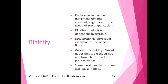Rigidity is resistance to passive movement that remains constant regardless of the speed or force of application — velocity-independent hypertonia, as opposed to spasticity which is velocity-dependent. With brain injuries, there are two specific patterns: decerebrate rigidity, which is rigid extension of the upper limbs, and decorticate rigidity, which is flexed upper limbs with extended neck, lower limbs, and plantar flexion.